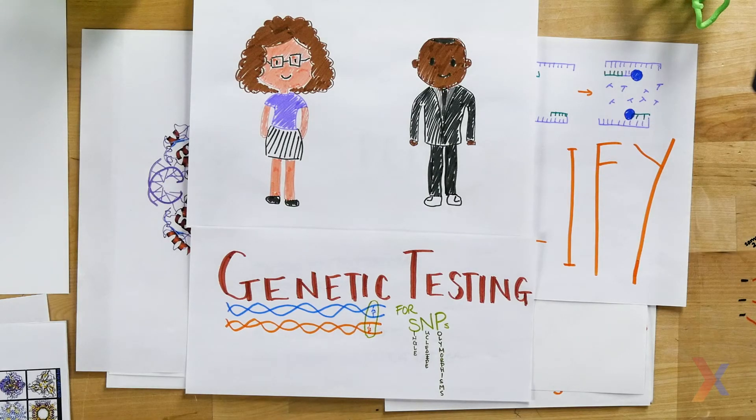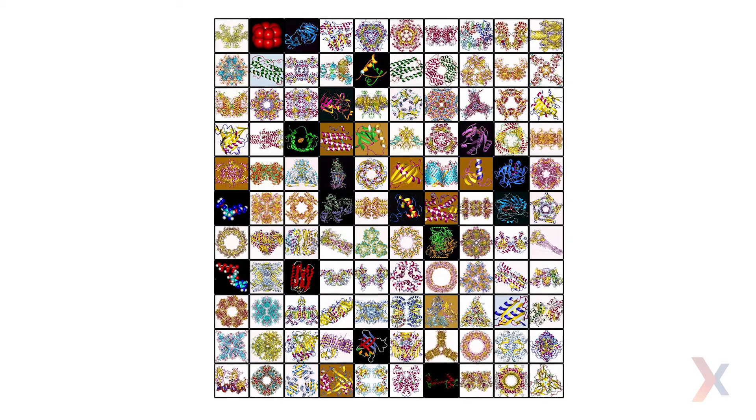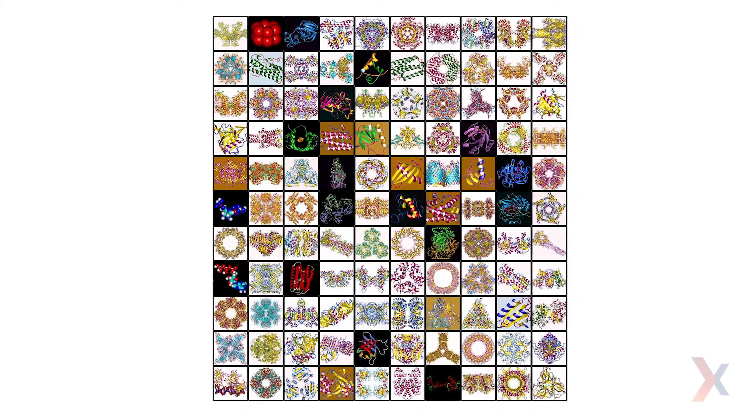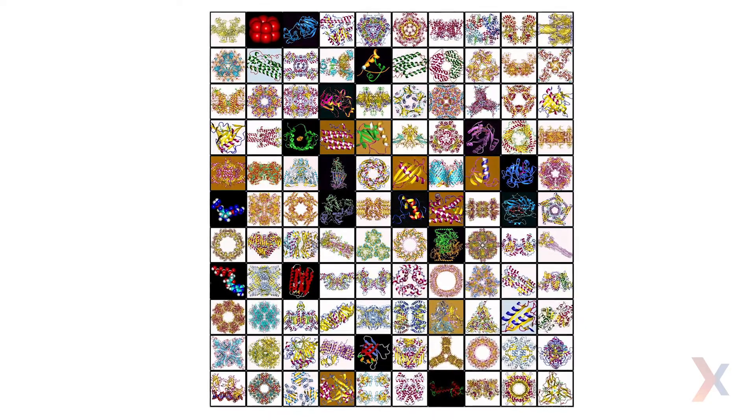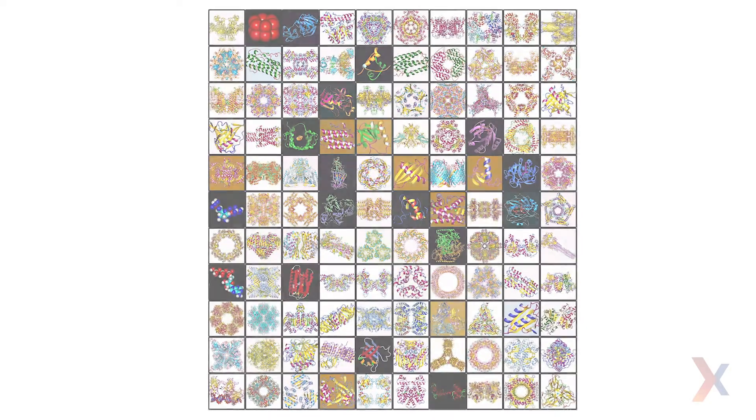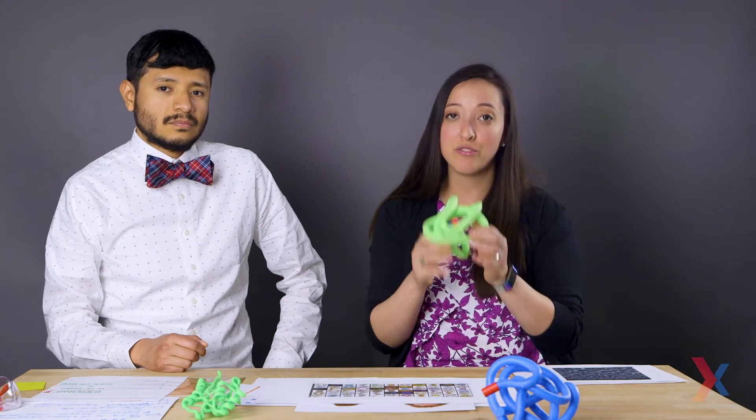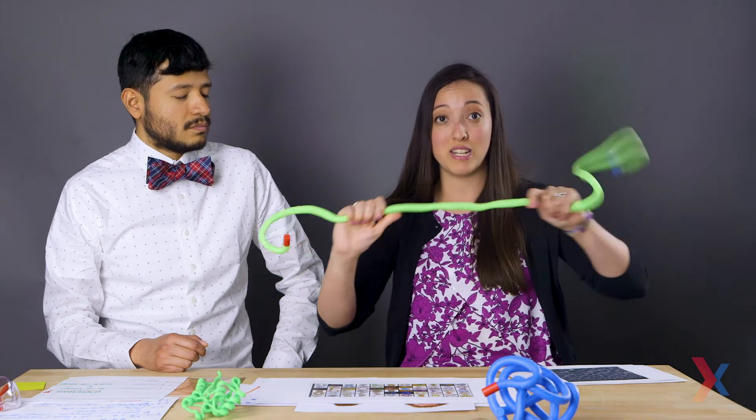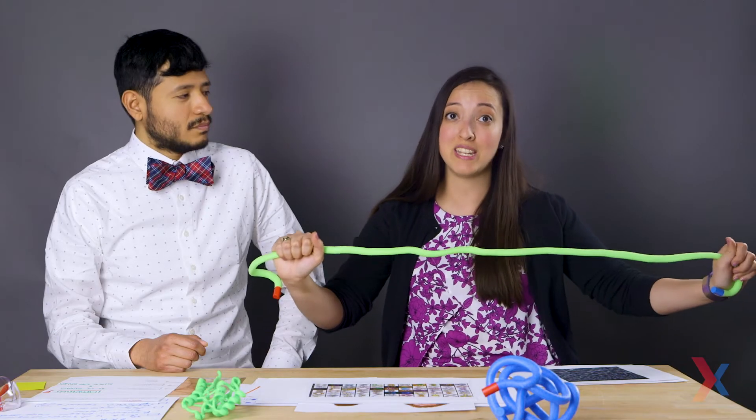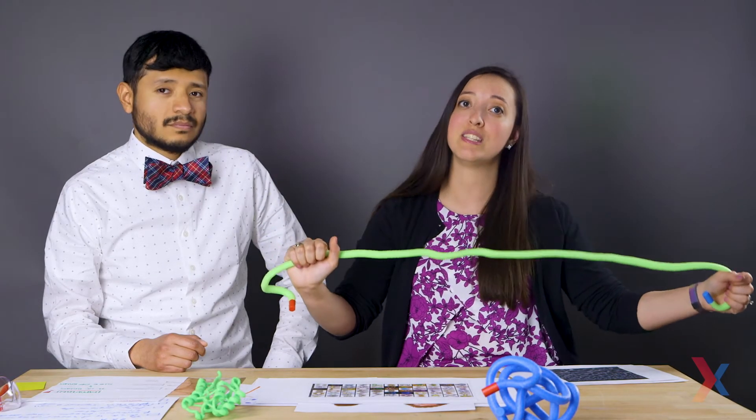You can also analyze proteins with gel electrophoresis. Proteins, though, come in a variety of shapes and sizes. They can also have different charges at different pHs. Now if you want to analyze a protein that has this complex 3D shape, the first thing you have to do is denature it by using heat and that will straighten it out. Then you have to coat it in negative charge so that it travels in the same direction.